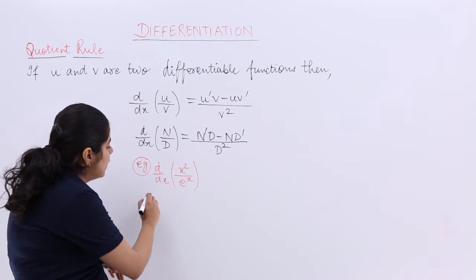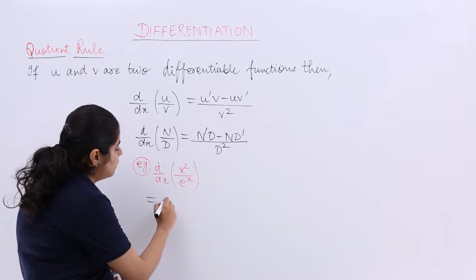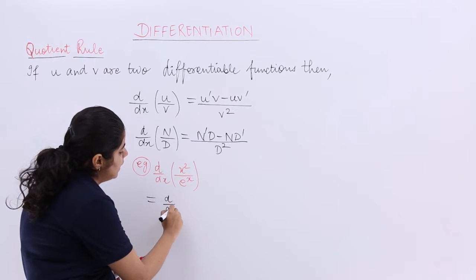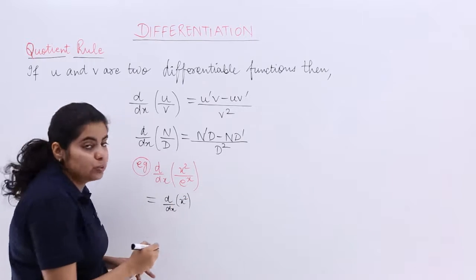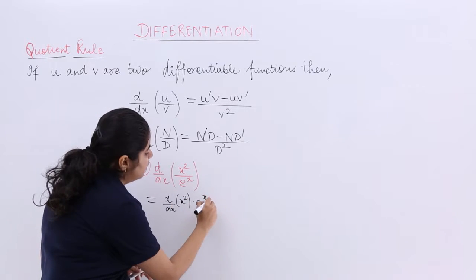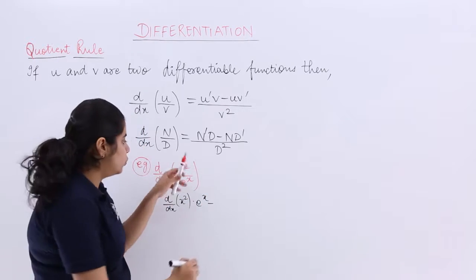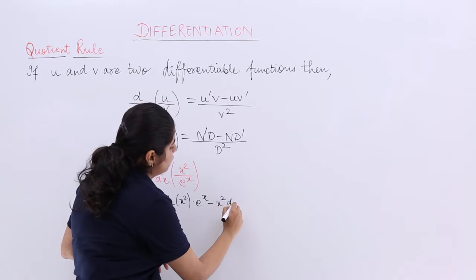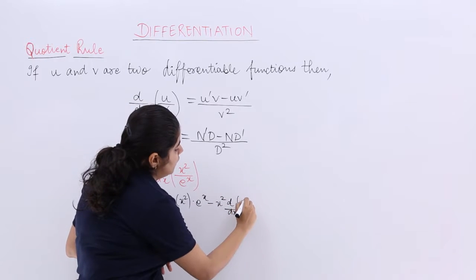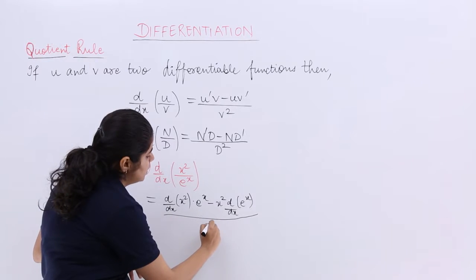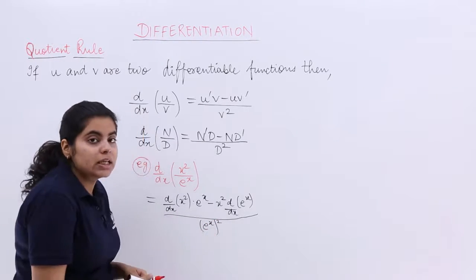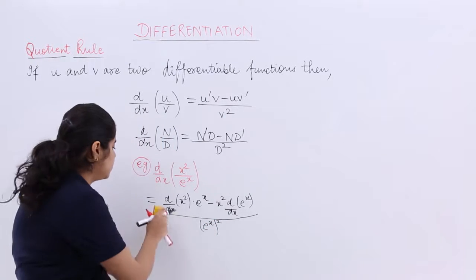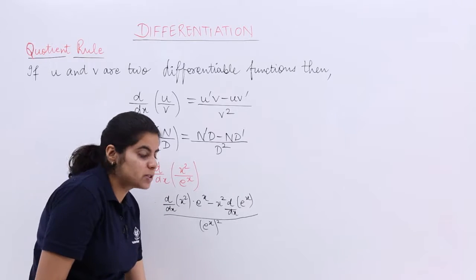Now it is what? The answer would be given by u'v, that means d by dx of u, u' multiplied by v minus u, u means the first term into v', whole upon v square. Now let me put equal to in alignment with the upon sign, that becomes better.